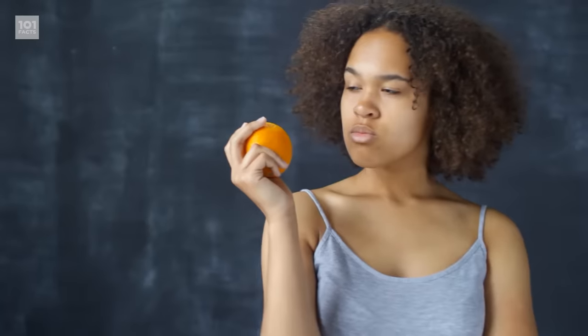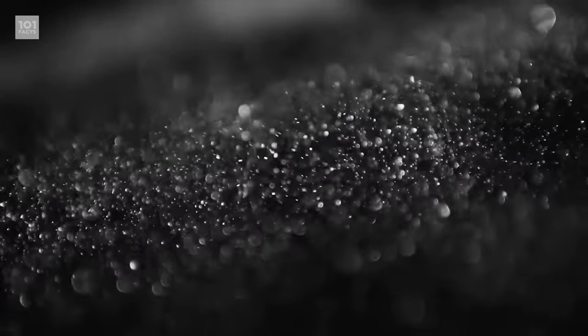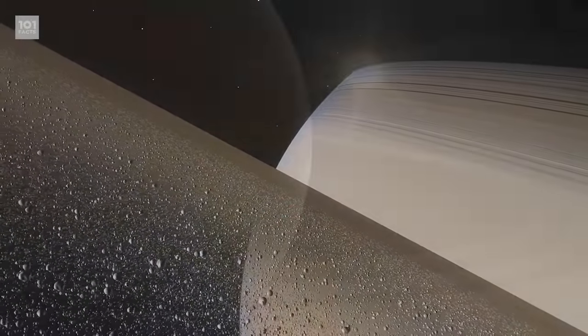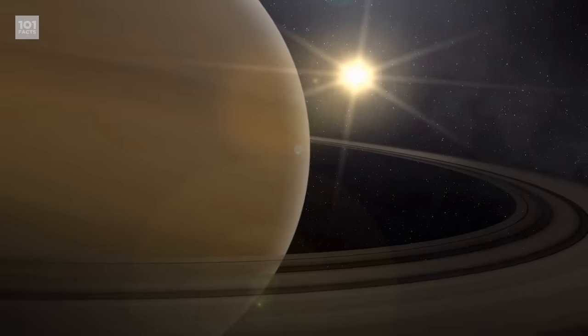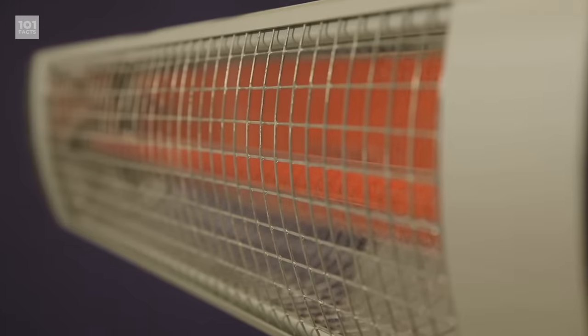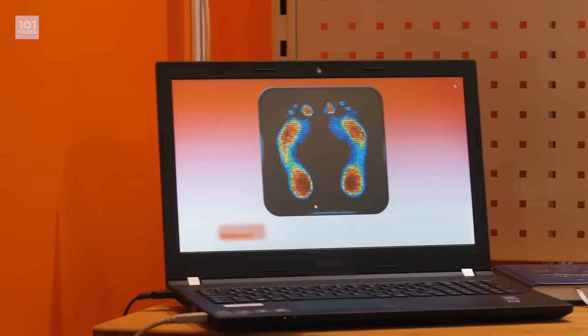You're probably wondering why no one noticed this giant ring earlier than 2009. And that's because it's so sparsely populated, and the particles and dust that make up the ring are so far apart, it can be difficult to see. It's also not helped by the fact that Saturn doesn't really reflect much light. It was only made visible with infrared light and heat radiation from objects in the ring.